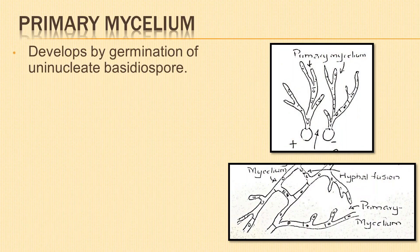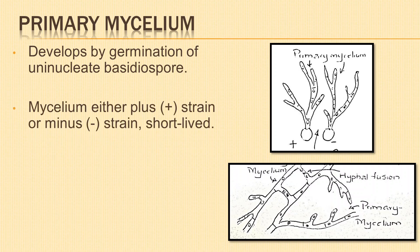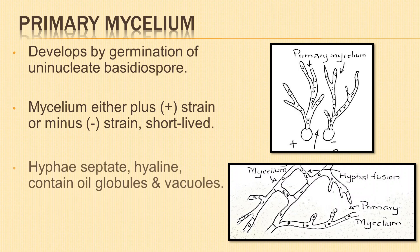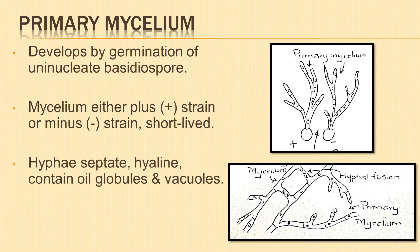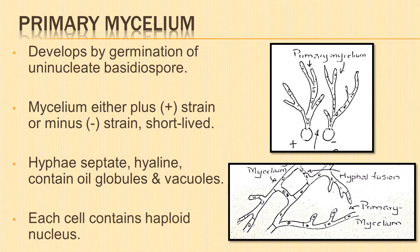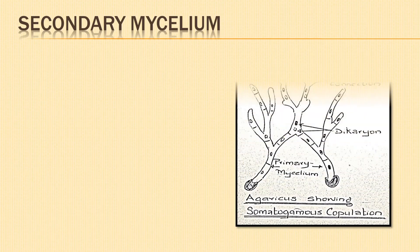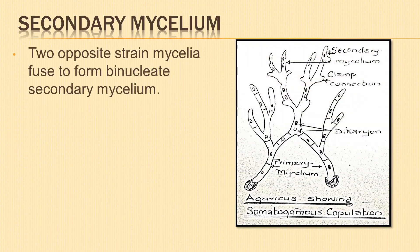The primary mycelium develops by the germination of uninucleate basidiospores. The mycelium is either of plus strain or minus strain and is short-lived. The hyphae are septate and hyaline, and the cells contain oil globules and vacuoles. Each cell contains a haploid nucleus.